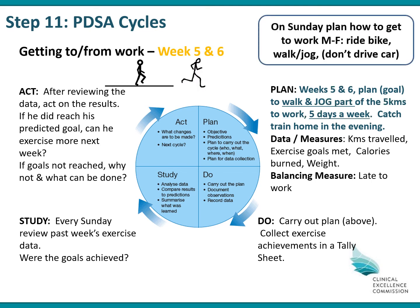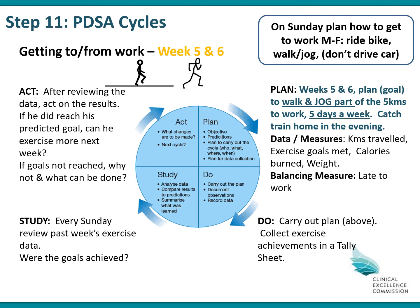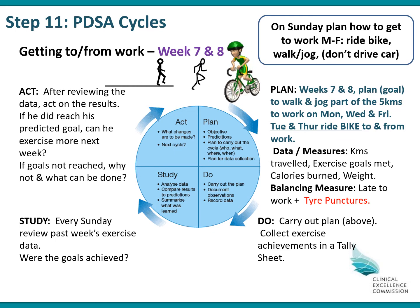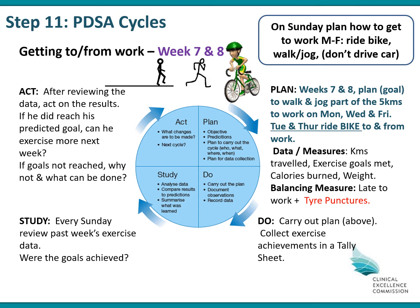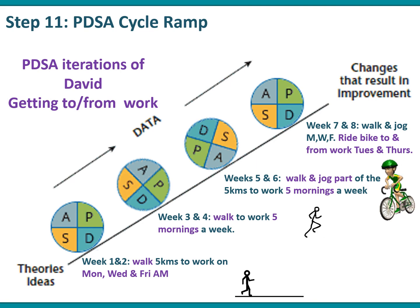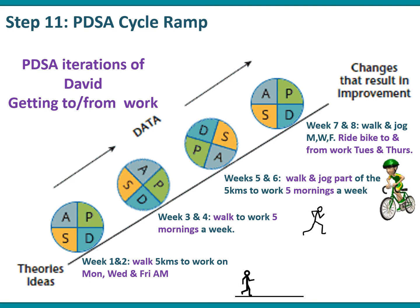In weeks five and six, he's going to walk to work five mornings a week but also break out into little jogs — ramping up his exercise regime and making things a bit harder. The Plan, Do, Study, Act is very simple. In weeks seven and eight, on Tuesday and Thursday he's going to ride his bike to and from work and walk to work the other days. What we're really demonstrating here is a PDSA cycle ramp, where from week to week we're making the intervention harder and harder and testing things as we go along.